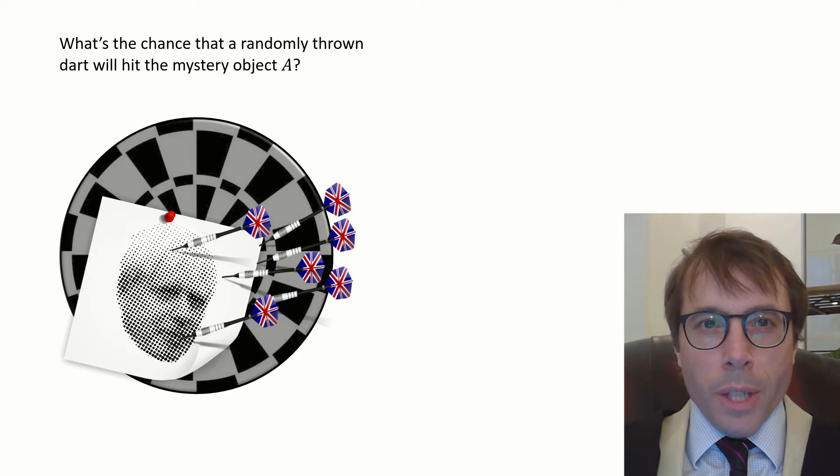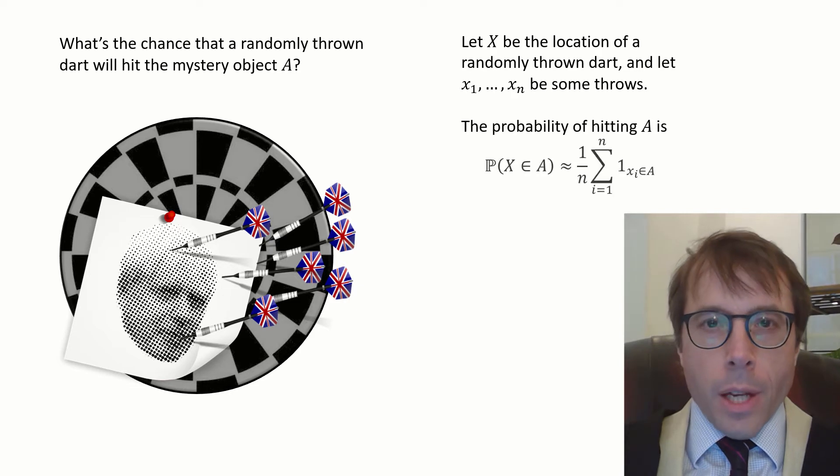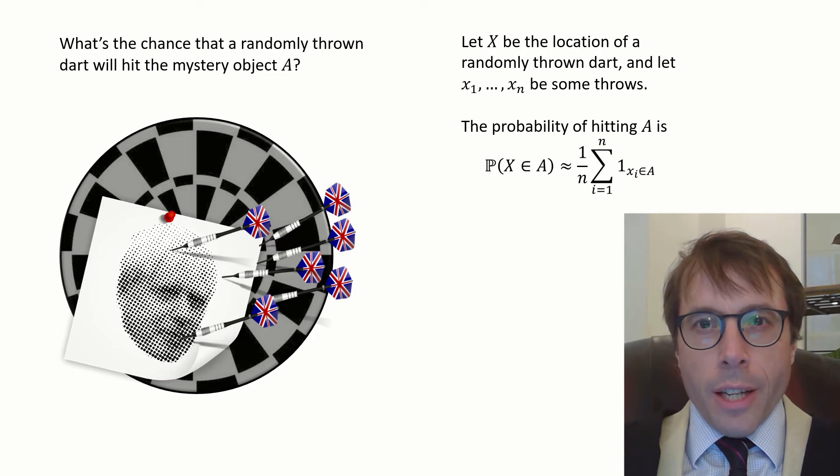Let's dress it up more formally. Let x be the random variable describing the location of a random dart and let x₁ up to xₙ be samples drawn from x. Then the probability of hitting A is roughly the fraction of the xᵢ that lie in A.